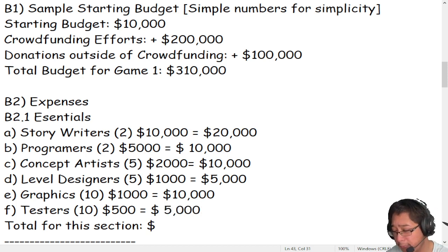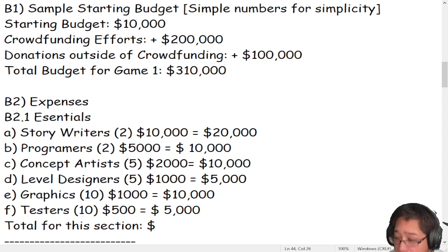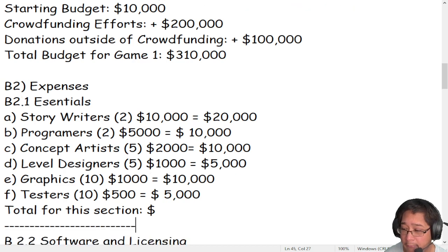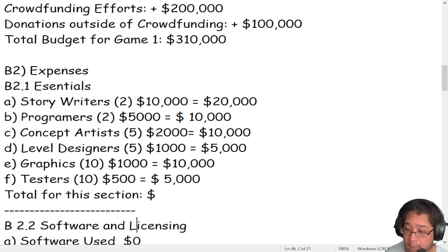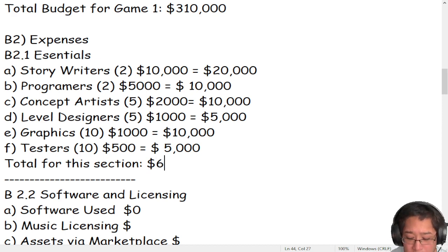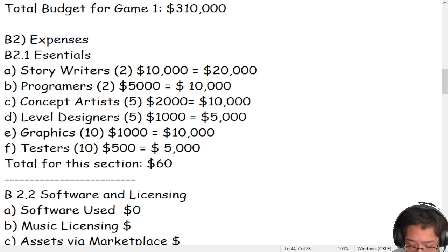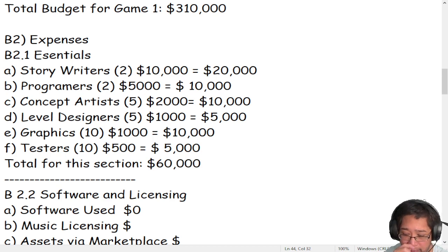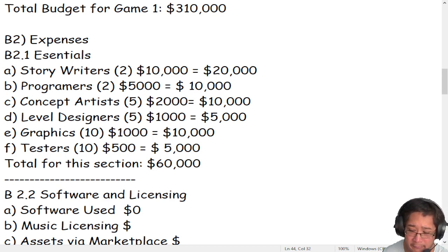The total for this section of the budget — adding everything together — is $60,000. That's $20,000 plus $10,000 plus $10,000 plus $5,000 plus $10,000 plus $5,000, bringing us to $60,000 for section one, which is the essentials. Keep this number — we're going to add it to the total expenses in a moment.